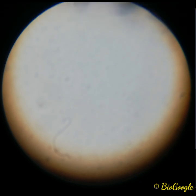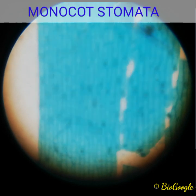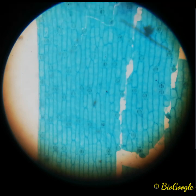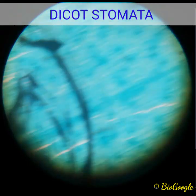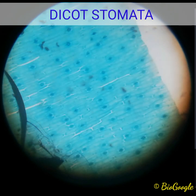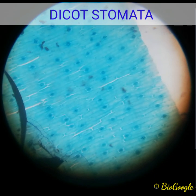That is stomata in a monocot leaf. The guard cells are dumbbell shaped in monocot stomata. Now moving to the dicot stomata — here you can see the dicot stomata with the kidney-shaped guard cells. These are the blue-colored mesophyll cells and the kidney-shaped guard cells of the dicot stomata.